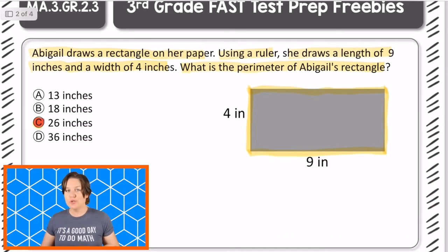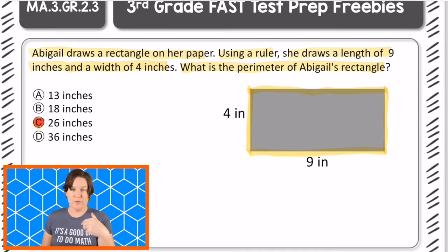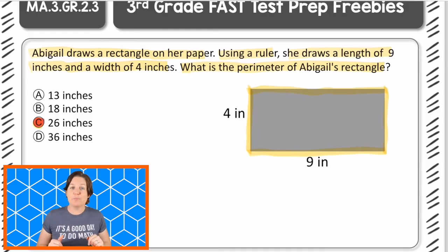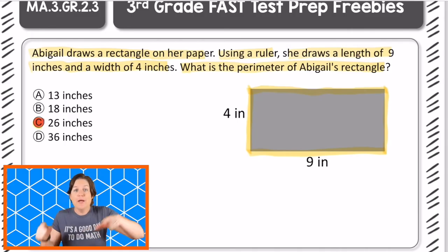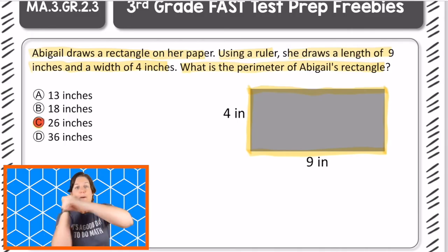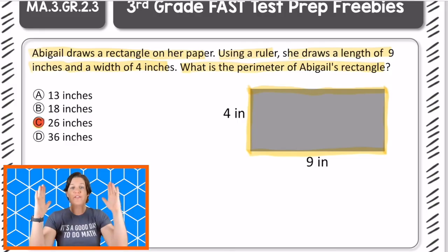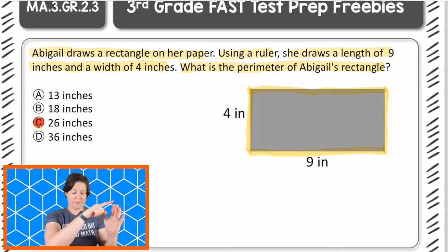Somebody might choose 36 inches because maybe they were thinking they needed to find the area, which would be multiplying the length times the width. Remember, finding the perimeter, we need to think of p-p-perimeter, p-p-plus — add up all the sides, finding the distance around it.